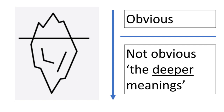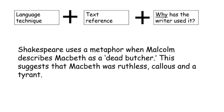You need to be finding the obvious quote, but telling the examiner the deeper meanings of those quotes — a bit like this iceberg here. We can see the top of the iceberg, underneath is much more substance. For question two, you want a language technique, then a reference, a quote, and then why has the writer used that technique? For example, Shakespeare used a metaphor where Malcolm describes Macbeth as 'a dead butcher.' This suggests that Macbeth was ruthless, callous and a tyrant. So you've got the technique — metaphor — quote 'dead butcher,' and then 'this suggests this.'